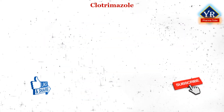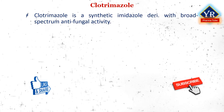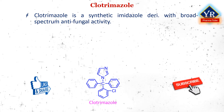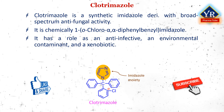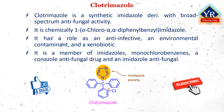The first drug of this lesson is clotrimazole. Clotrimazole is a synthetic imidazole derivative with a broad spectrum of antifungal activity. It is chemically 1-orthochloro-alpha,alpha-diphenylbenzyl imidazole. It is a member of the class of imidazoles — specifically 1H-imidazole in which the hydrogen attached to the nitrogen is replaced by a monochlorotrityl group. It has a role as an anti-infective agent, an environmental contaminant, and a xenobiotic. It is a member of imidazoles, a member of monochlorobenzenes, a conazole antifungal drug, and an imidazole antifungal drug.